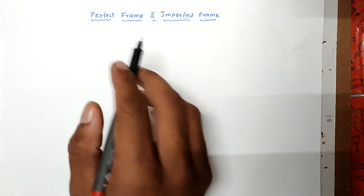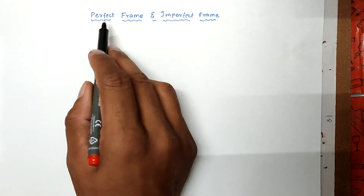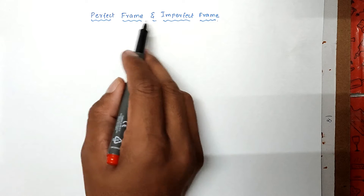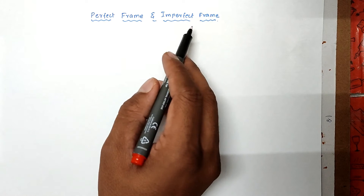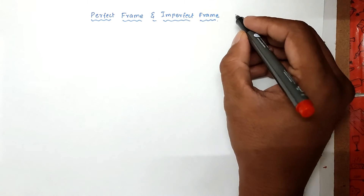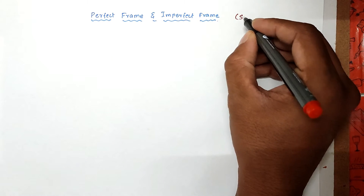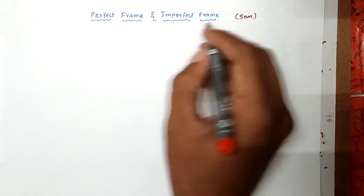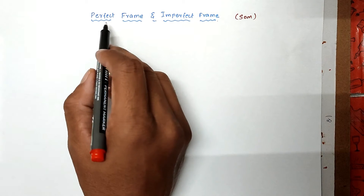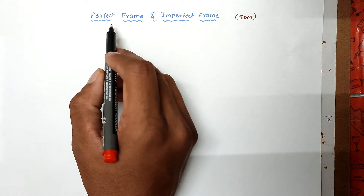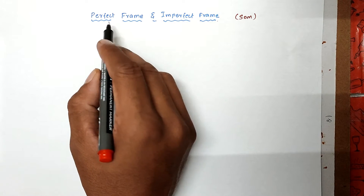Hello friends, welcome to 7th engineering exam. Today we are going to see the topic related with perfect frame and imperfect frame. This is from strength of materials. We have to know what is meant by perfect frame and imperfect frame.